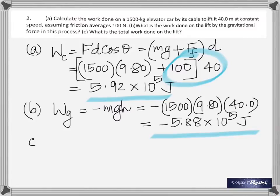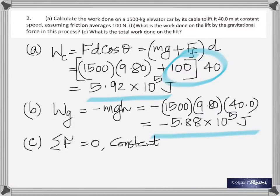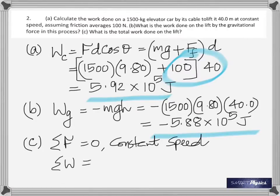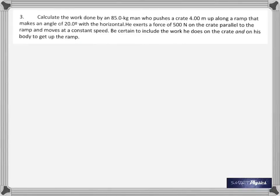The part c asks: what's the total work done on the lift? That symbol means summation — net force. What's the net force in this case? A machine applies a force upward, and gravity applies an equal force downward, so the net force is zero. The electric motor applies force up and gravity applies equal force down. Also, at constant speed, acceleration is zero, so net force = mass times acceleration = zero. Therefore net work is zero.